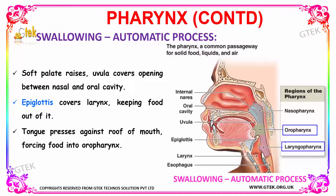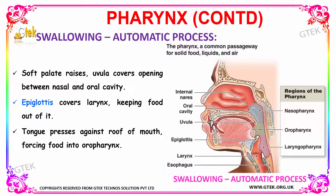As you can see, your pharynx connects the nasal cavity and the oral cavity. Your epiglottis covers the larynx. Meanwhile, your tongue presses the food against the roof of the mouth, forcing the food into the oropharynx, which leads it gradually into your laryngopharynx. Finally, the food enters your esophagus. By peristalsis, the food reaches the stomach. This is how the swallowing process is carried out in the human mouth.